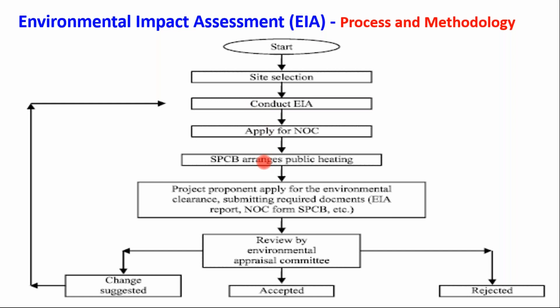After implementing the suggestions, the project can go back to the second step of the EIA process — conducting EIA again after suggestion implementation, then again applying for NOC, then again for public hearing, then a new proposal after modifications and rectifications, and then review again. If all suggestions are incorporated in the report and implemented to the satisfaction of EAC, they can accept the report and sanction Environmental Clearance. If the proposal is rejected, EAC must give the reasons or causes of rejection.